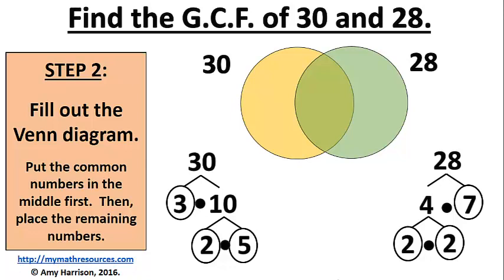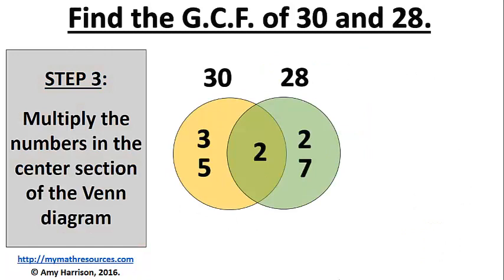Both 30 and 28 have a 2, so we can highlight the 2 and put it in the center of the Venn diagram. Since there are no other common prime factors, we just need to complete the Venn diagram. Put the remaining 3 and the remaining 5 in the yellow 30 section. Put the remaining 2 and the remaining 7 in the green 28 section.